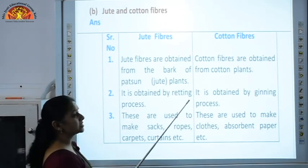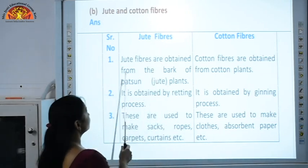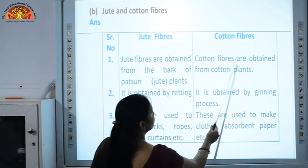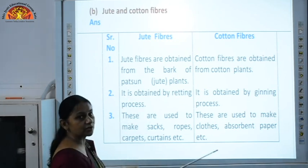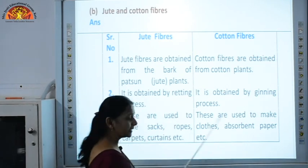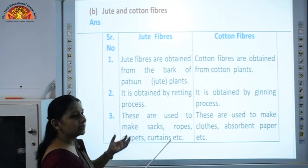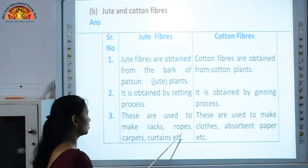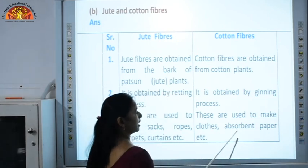The next comparison is between jute fibers and cotton fibers. Jute fibers are obtained from the bark of Patson plants, whereas cotton fibers are obtained from cotton plants. The process by which jute fibers are obtained is retting, while cotton fibers are obtained by the process of ginning. Jute is used to make sacks, ropes, carpets and curtains — especially for packaging materials. Cotton fibers are used to make clothes and absorbent paper.